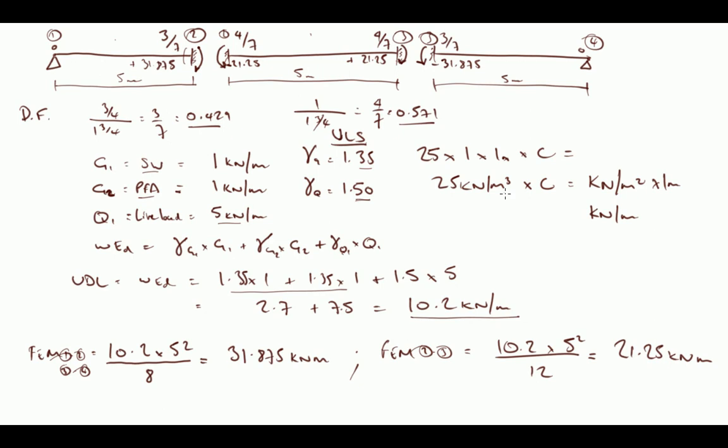So those are our starting fixed end moments and our distribution factors, which is what we need to get started on doing our moment distribution exercise. That means we've got roughly 10 kilonewton meters of moment difference between those two, so we need to have a balancing moment and allow that to distribute into this structure. We cannot have a difference of moments. This moment in the clockwise direction internally at 2 must be equal and opposite to the moment as a result of this. When we release these fixed end moments onto the structure, they will redistribute according to the stiffnesses of the structure and find an equilibrium state. That's what we are going to do by the moment distribution exercise in the next video.